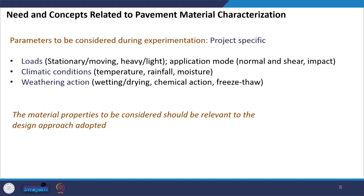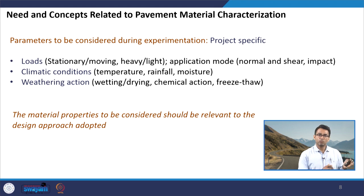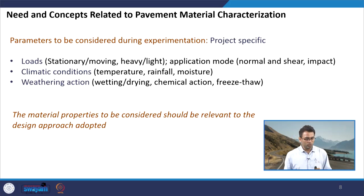The behavior of the entire pavement structure can change depending on these parameters. The material properties to be considered should be relevant to the design approach adopted. For example, if flexural strength is an input in the design approach, I should do flexural strength testing; if resilient modulus is an input, I should find out the resilient modulus. In the US, dynamic modulus of the bituminous layer is taken as an input for pavement design, while in India resilient modulus is used. So there is no point doing a dynamic modulus test in the laboratory when resilient modulus is the required input in pavement design.